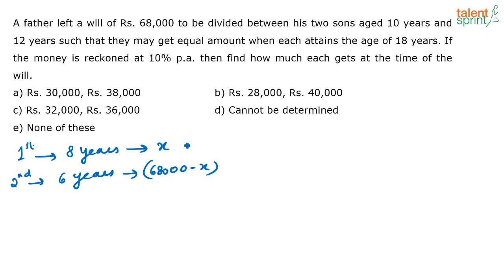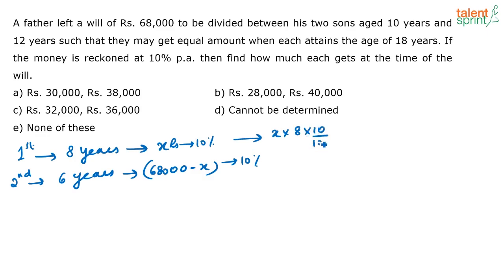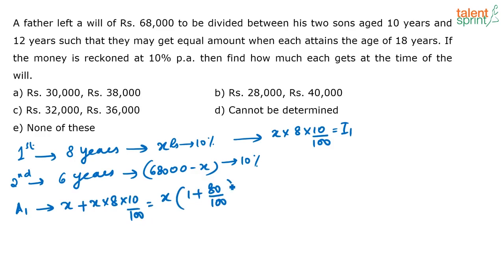Both these amounts get 10% interest, and at the end they become equal amounts. The interest on the first amount — X rupees at 10% interest for 8 years — is X into 8 into 10 by 100. The total amount that the first son will get at the end of 8 years is the principal plus the interest, which is X into 1 plus 80 by 100.